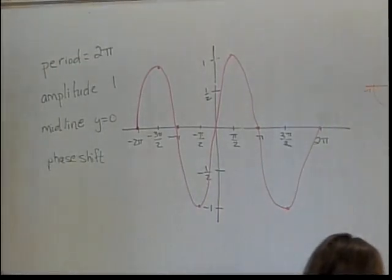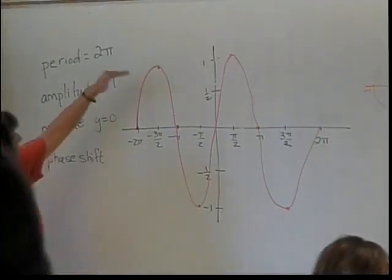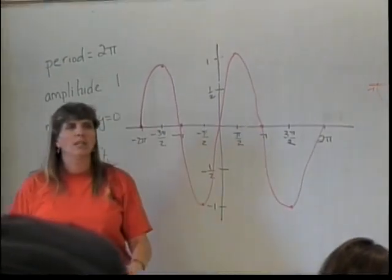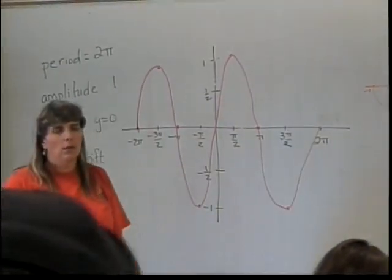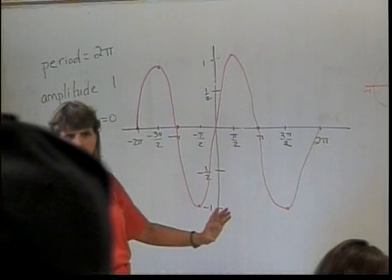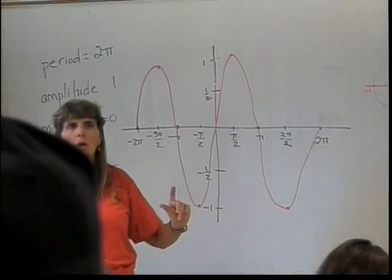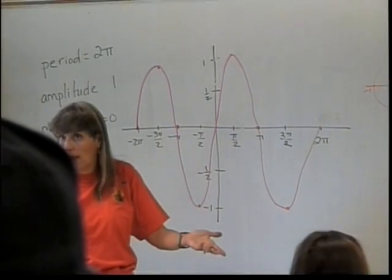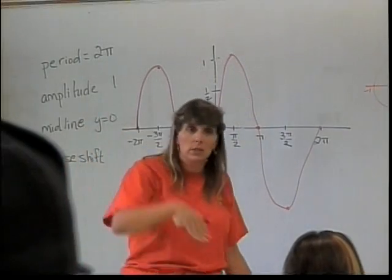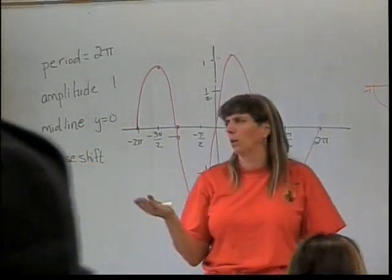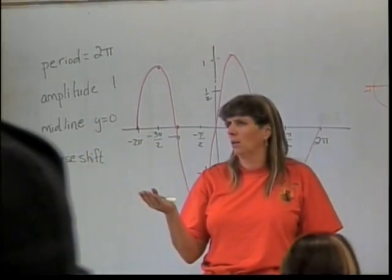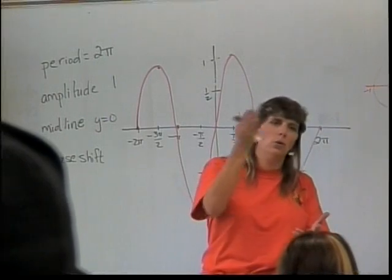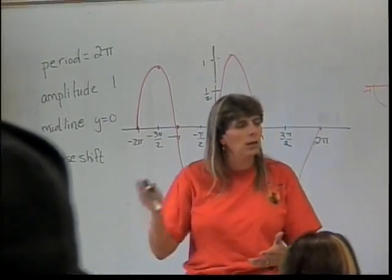This type of graph that goes up and down is referred to as a sinusoidal graph. It's called a sinusoidal graph — related to sine, but not exactly, because cosine graphs are also sinusoidal graphs. They do the same up and down thing because they go through that same set of values, but as the x-coordinates that the y-coordinates went through to find our sine graph.